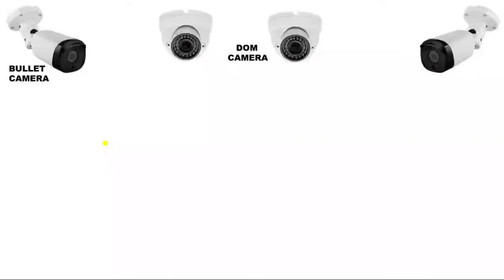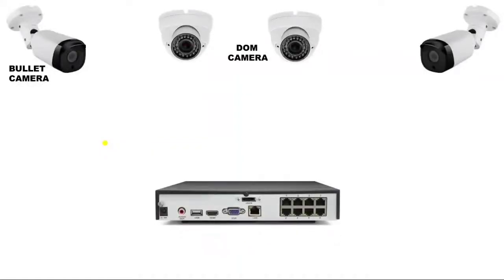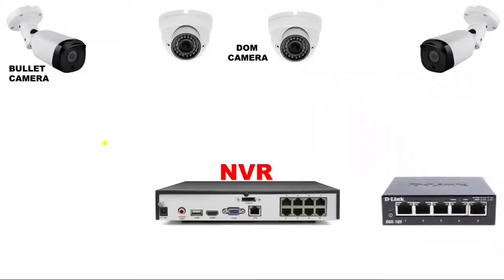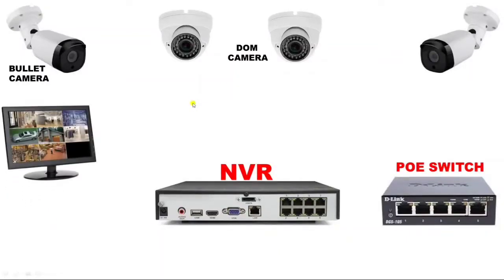For IP camera installation, we connect an NVR system. You can see here we have one NVR. With this NVR, we connect a POE switch for camera connection. In this POE switch, you can see there are only five terminals — one for NVR to POE switch connection, and four for four camera connections.